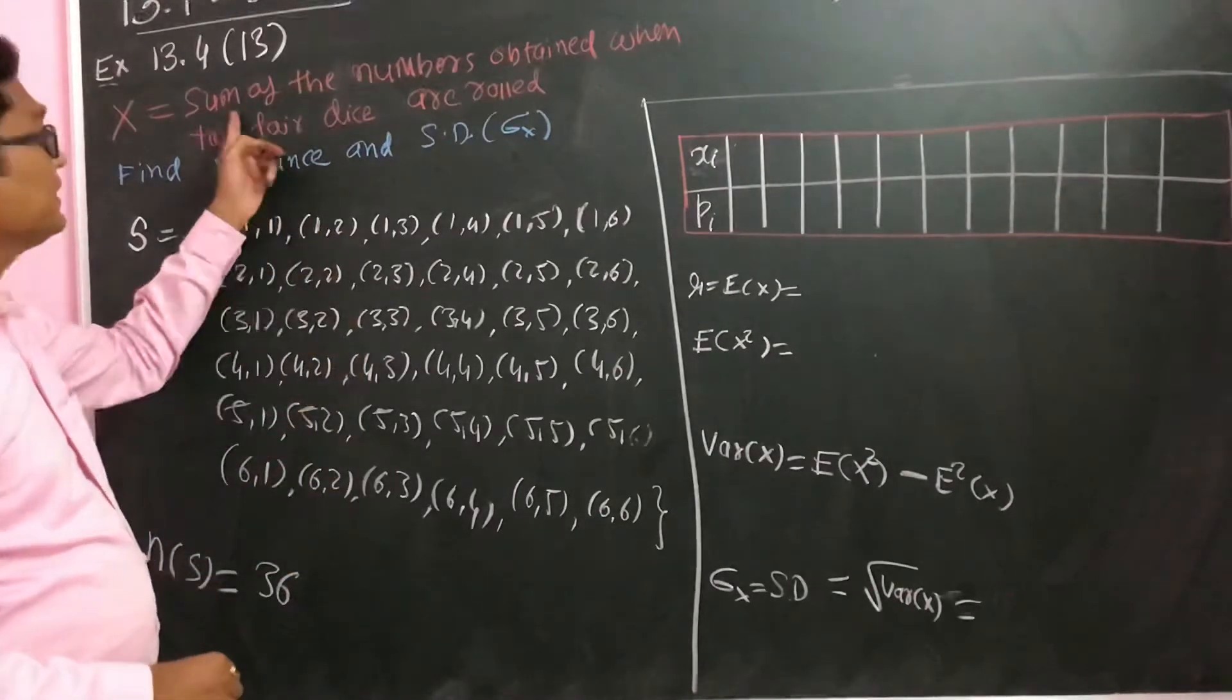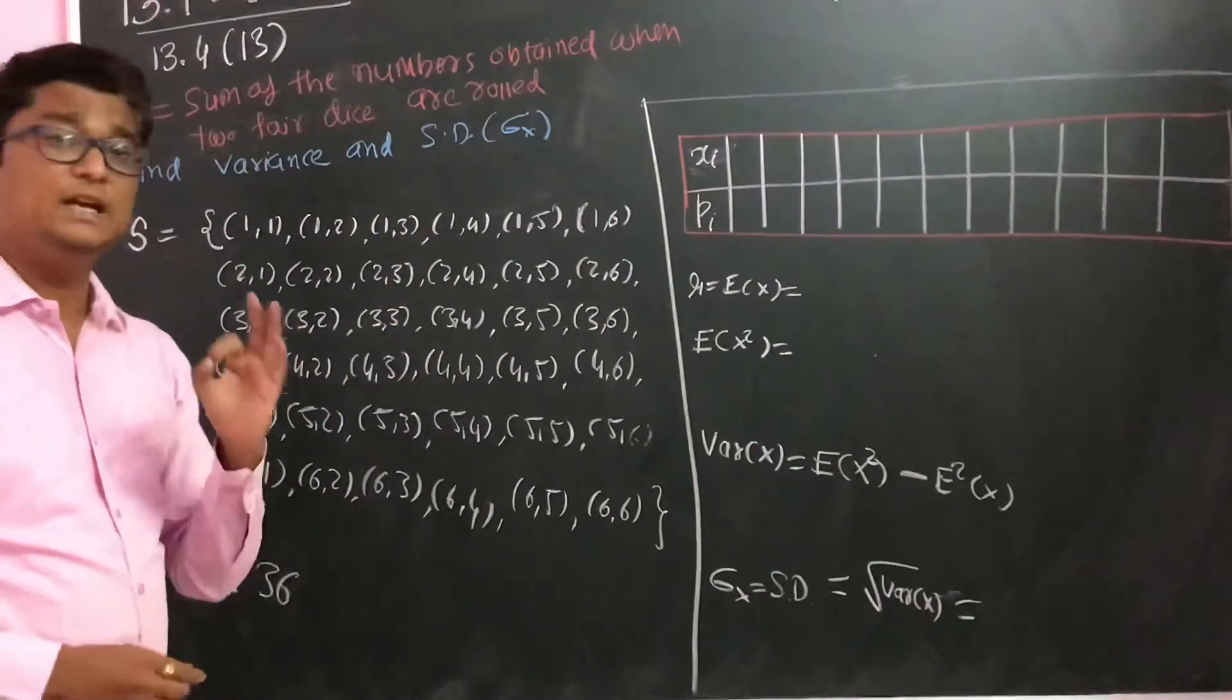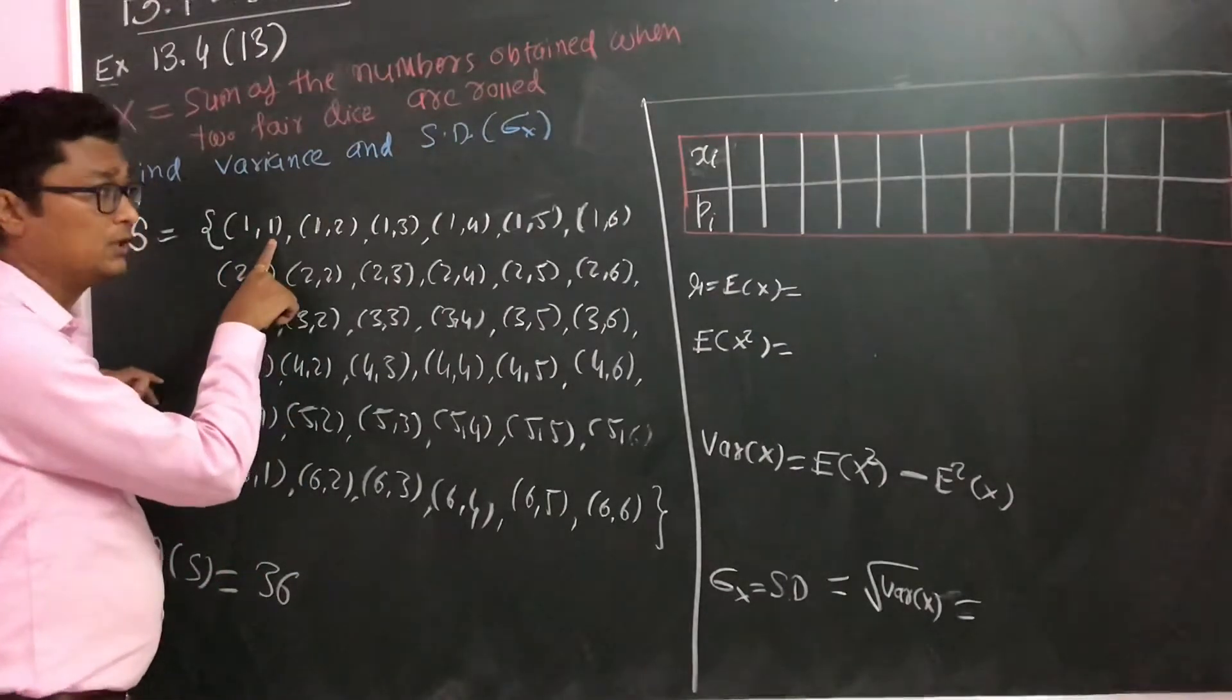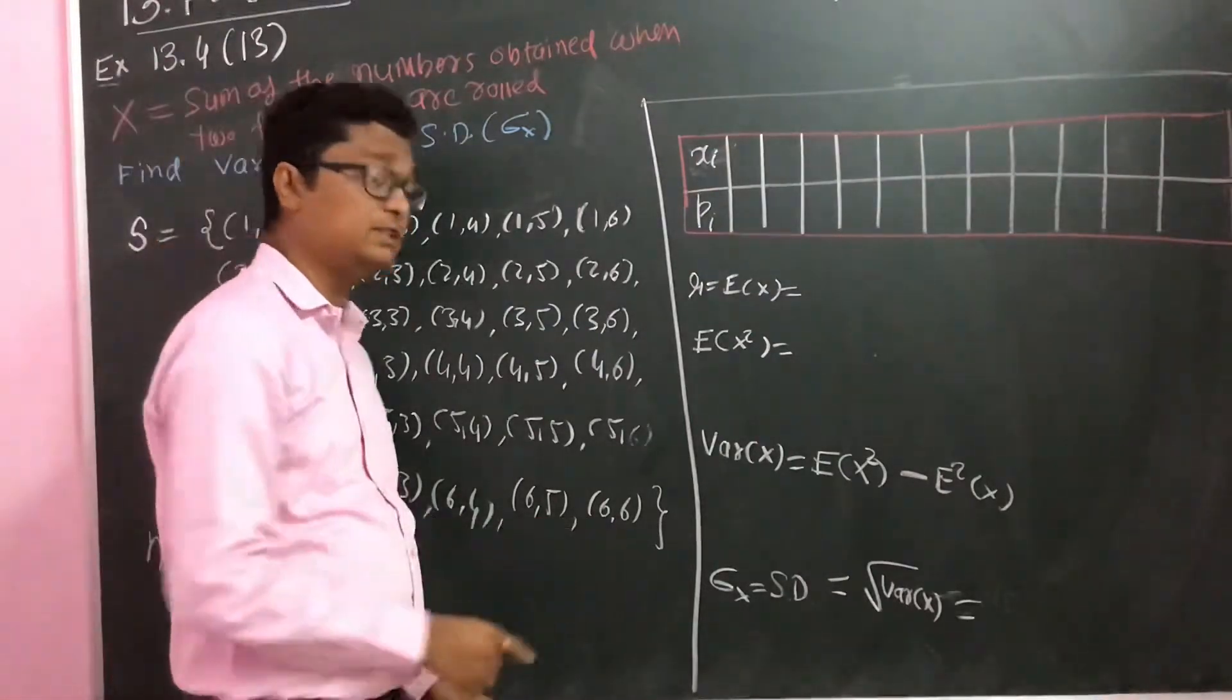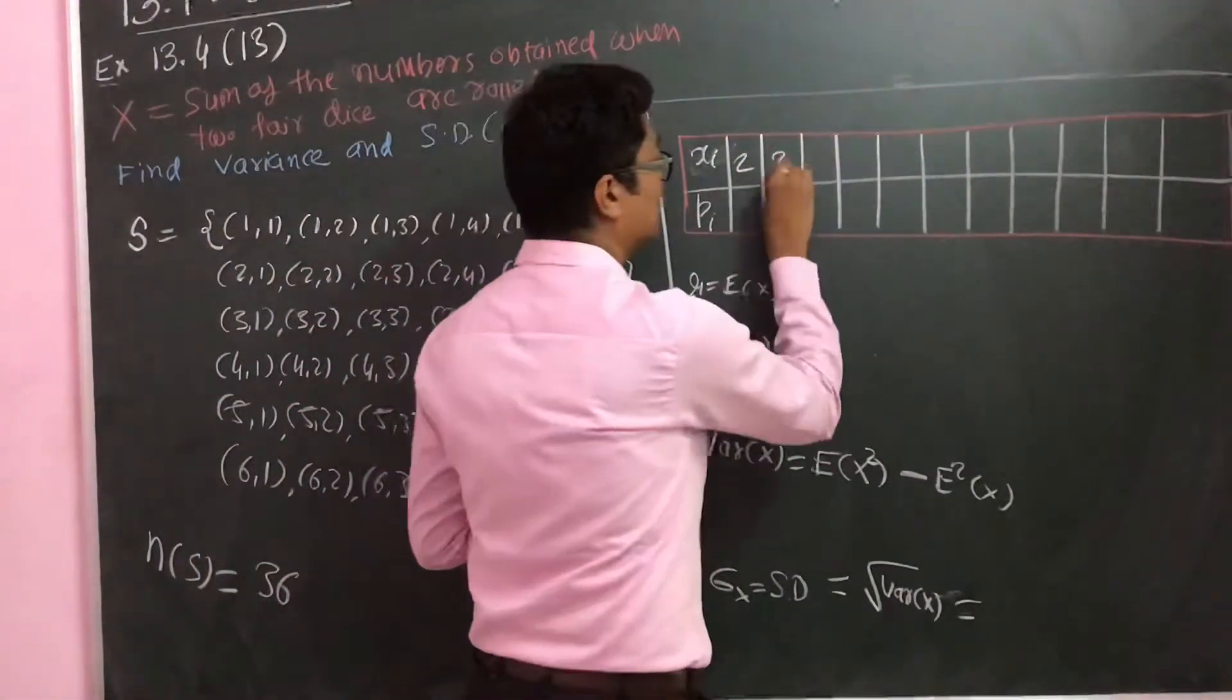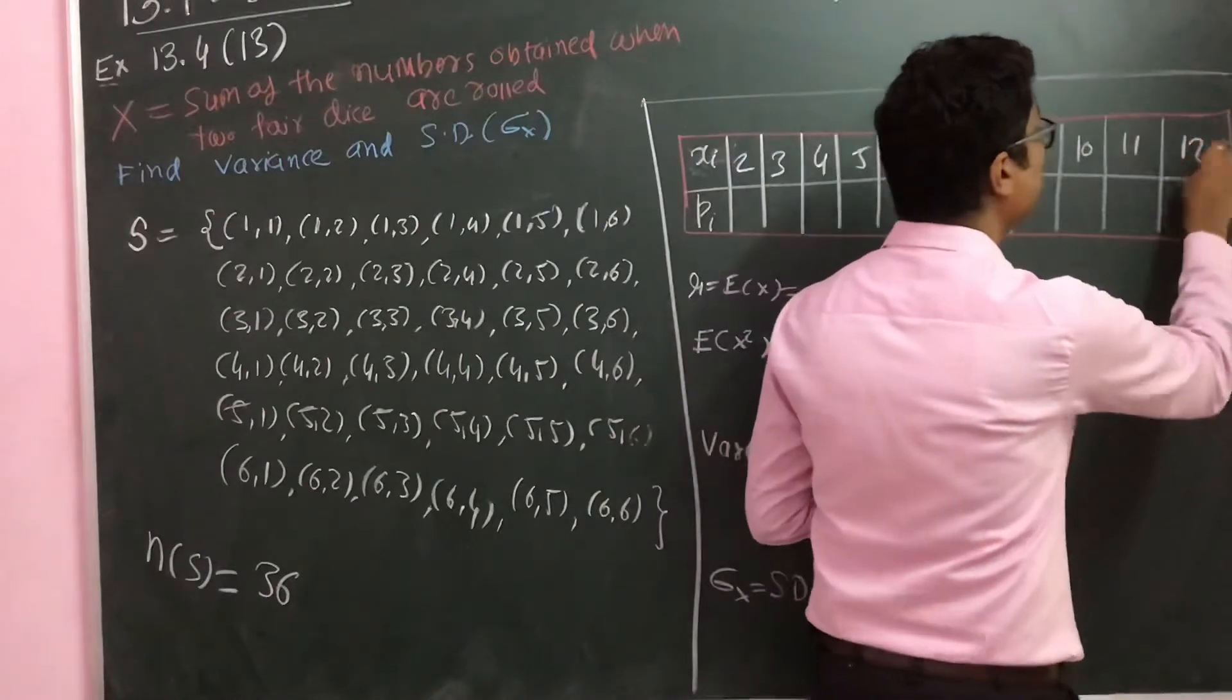Now we have to write the sum of the two numbers. When we add any of these combinations, the minimum number possible is 2, like 1 plus 1. Similarly, the maximum number possible is 6 plus 6, that is equal to 12. So X can take values 2, 3, 4, 5, 6, 7, 8, 9, 10, 11, and 12.